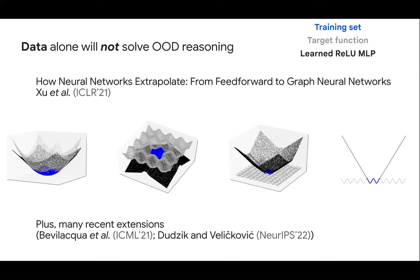This result is only for models using the ReLU activation, and modern architectures like transformers don't really use ReLUs nowadays. There have been more recent extensions of this theory to encompass more general frameworks, particularly the work on causally motivated analysis from Beatrice Bevilacqua and others, and also work I've done with Andrew Dudzik at NeurIPS.